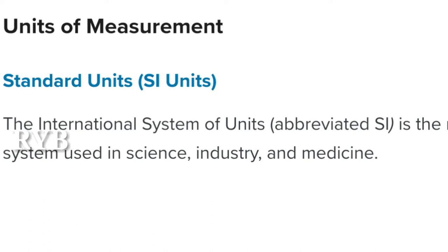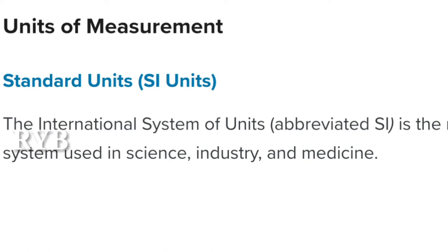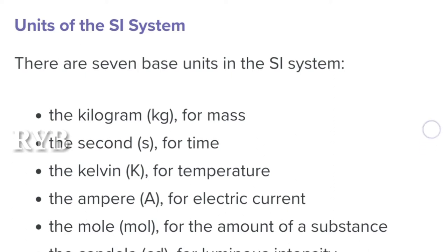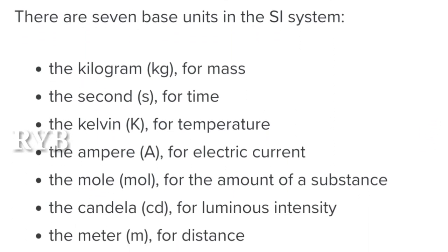The SI system is the metric system used in science, industry, and medicine. There are seven base units in the SI system: mass in kilograms, time in seconds, temperature in kelvin, electric current in amperes, amount of substance in moles, luminous intensity in candela, and distance in meters. The MKS system is also known as the SI system — the International System of Units. This is the basics of measurements.